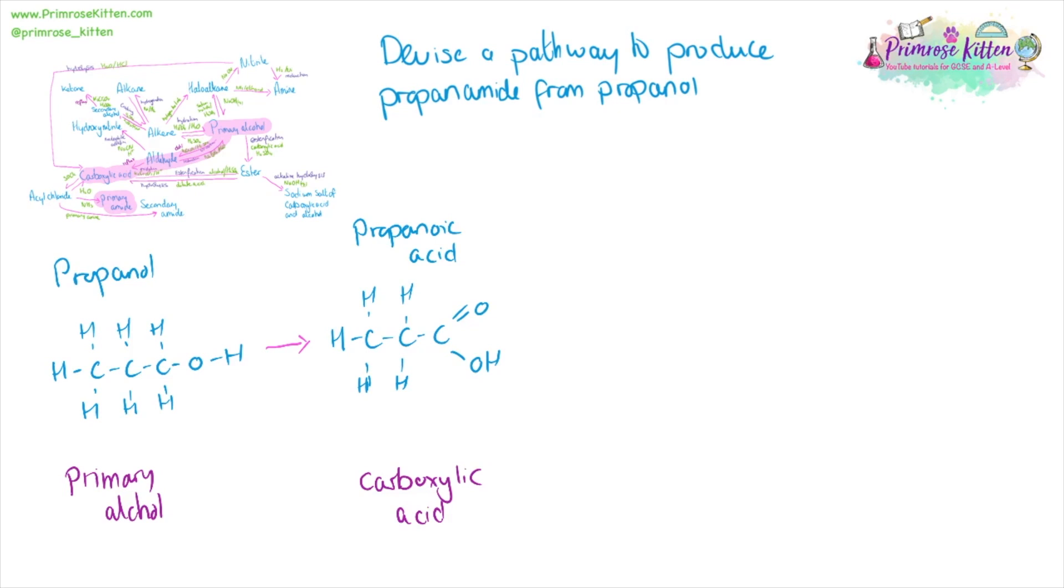This is going to need to be refluxed. If we distill it, we'll just end up with an aldehyde, and it needs to be with acidified potassium dichromate. From the carboxylic acid, we can then go to an acyl chloride, giving us propanoyl chloride, and then from our acyl chloride we can go to our primary amide.